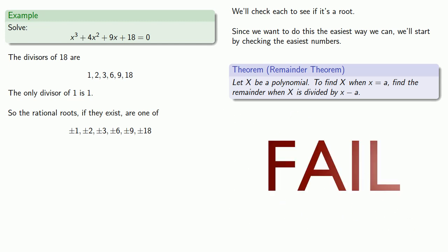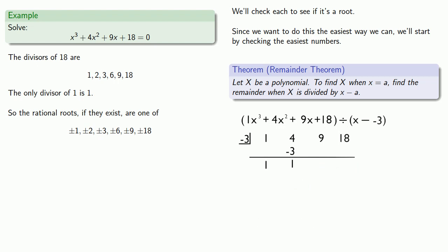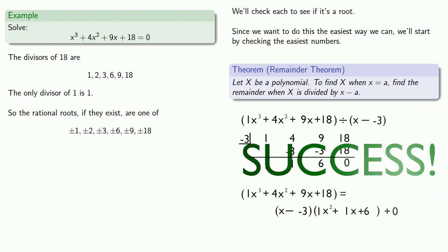x equals negative 3. Finally, and we see that x cubed plus 4x squared plus 9x plus 18 factors as x plus 3 times x squared plus x plus 6.